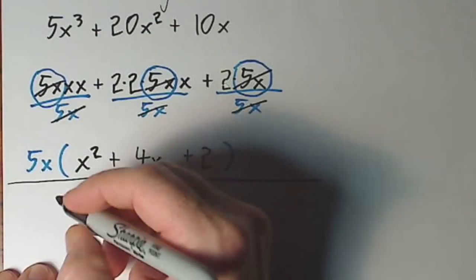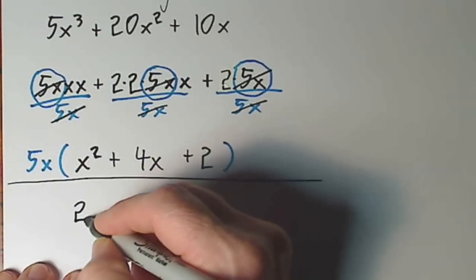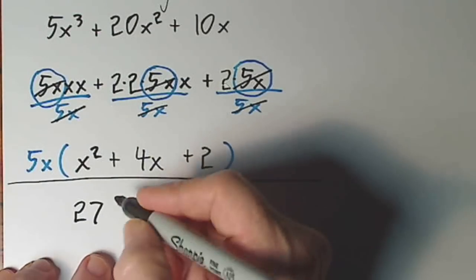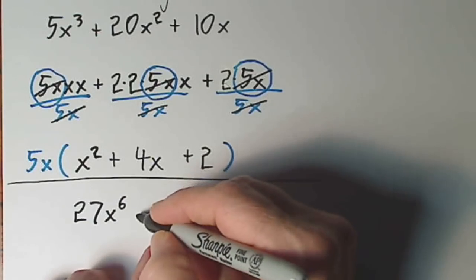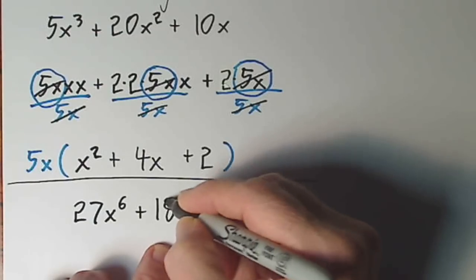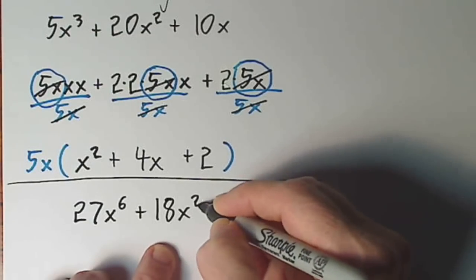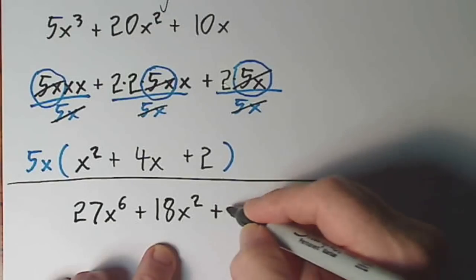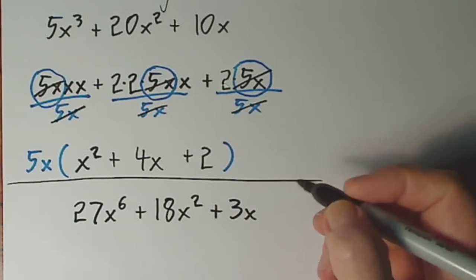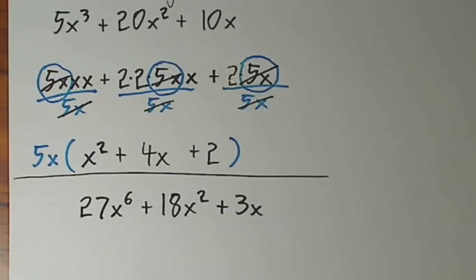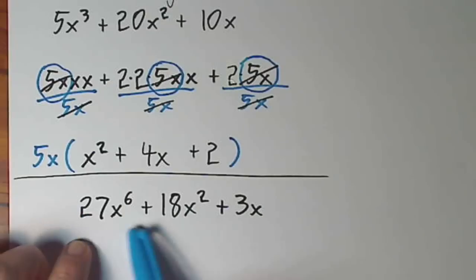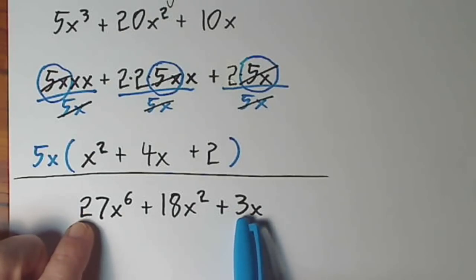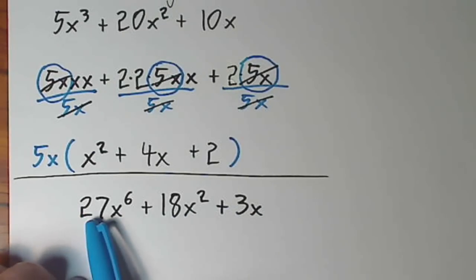If you had 27x to the 6th plus 18x squared, let's say plus 3x. You simply look at each of the terms, and for the coefficients, I can get a 3 out of here, I can get a 3 out of here, and I can get a 3 out of here.